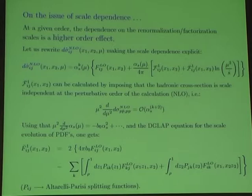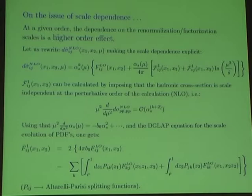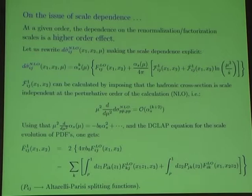So knowing the leading-order cross-section, you know what the mu-dependent part of the NLO cross-section must be. Similarly, knowing the NLO cross-section, you can predict what the leftover mu-dependence at NNLO must be. However, you cannot predict the full cross-section just from the mu-dependence — you only get f1-bar, not the full f1. The important things to see are: first, the cancellation of mu-dependence at the given order, and second, that from that you can predict what kind of leftover mu-dependence remains in your calculation.